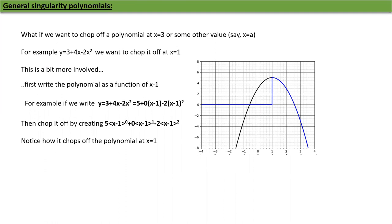What if we want to chop off a polynomial at x = a, say x = 1 for the polynomial 3 + 4x − 2x²? We first rewrite the polynomial as a function of (x − 1): it becomes 5 + 0·(x−1) − 2·(x−1)². You can verify these two forms are equal. Then apply the chop-off: 5·⟨x−1⟩⁰ + 0·⟨x−1⟩¹ − 2·⟨x−1⟩². The polynomial is now chopped off at x = 1. You can chop off a polynomial wherever you like by rewriting it in terms of that shifted variable.